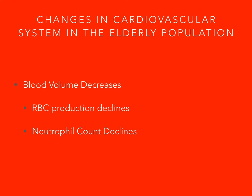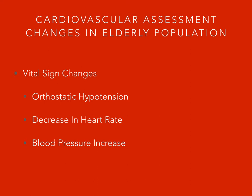Now let us discuss the cardiovascular assessment changes in the elderly population. Starting with vital signs — orthostatic hypotension is most likely to occur due to the insensitivity of the baroreceptors we discussed earlier. You'll also see a decrease in heart rate due to the disruption of the conduction system. Blood pressure, particularly the systolic blood pressure, tends to elevate as we age due to the increase in vascular resistance, increased heart workload, and the changes within the vasculature.